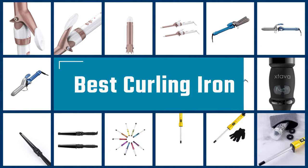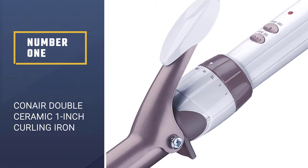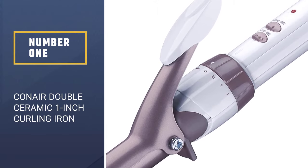If you are looking for the best curling iron, here is a collection you have got to see. Let's get started. Number 1. Conair Double Ceramic 1 inch curling iron.